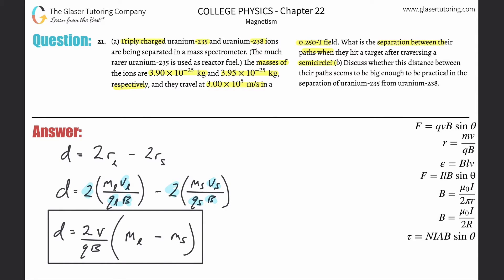Here we're just simply going to have to plug it in, so this is two times the velocity that was given, so there's going to be 3 times 10 to the fifth.